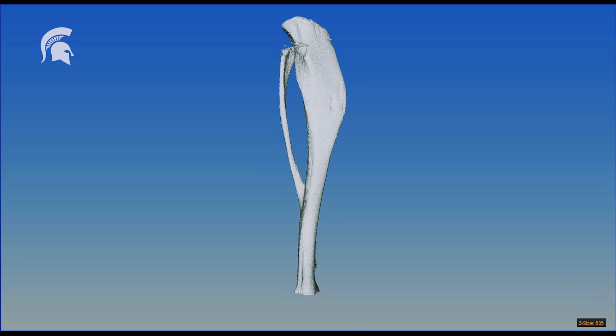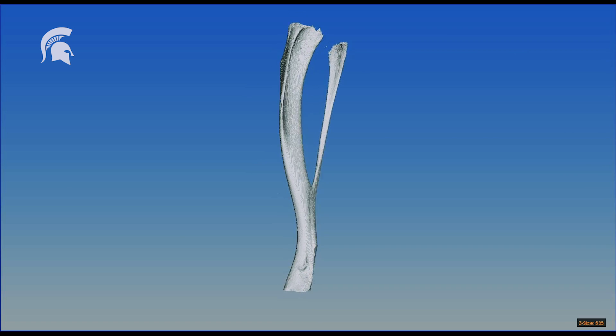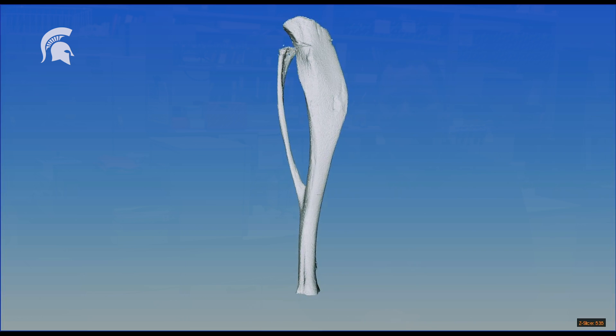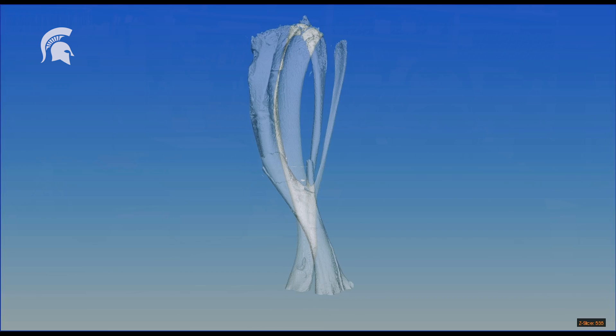Here we're seeing an intact shin bone, or the tibia, that's being rotated 360 degrees, and it's been scanned using a CAT scan technology called microcomputed tomography.